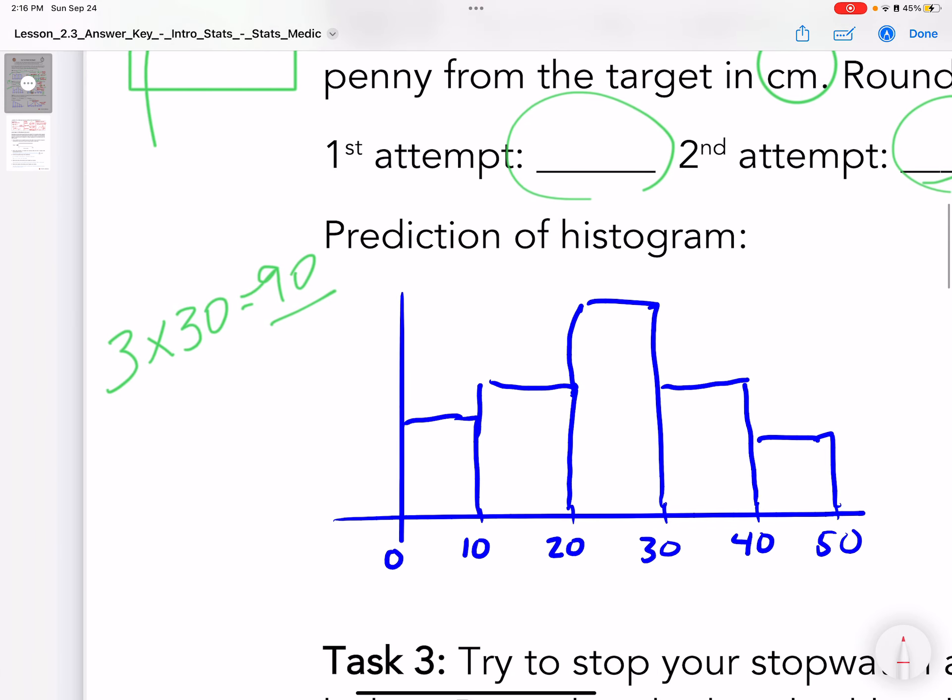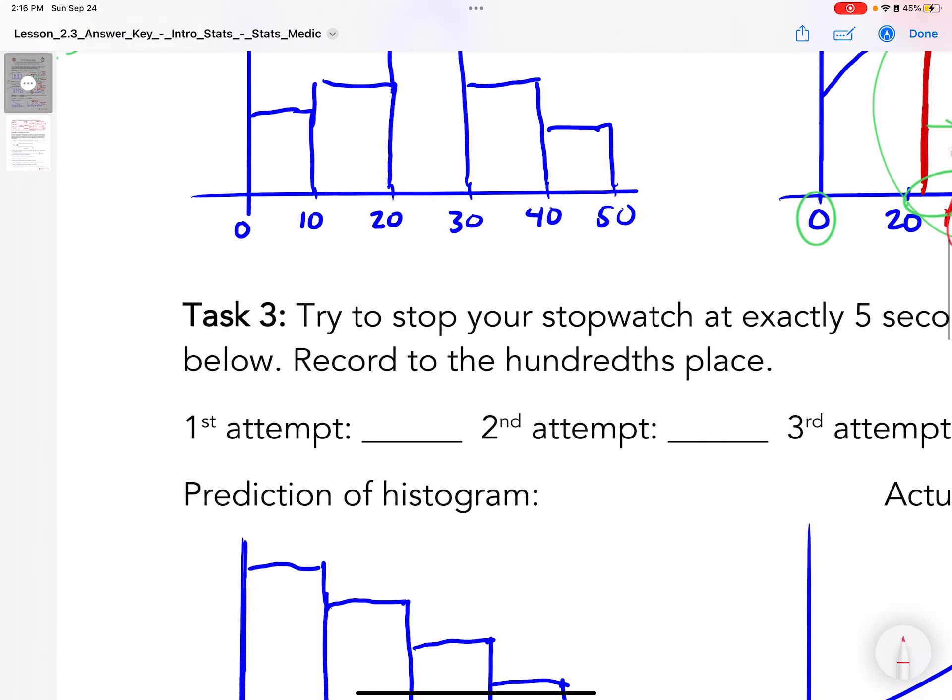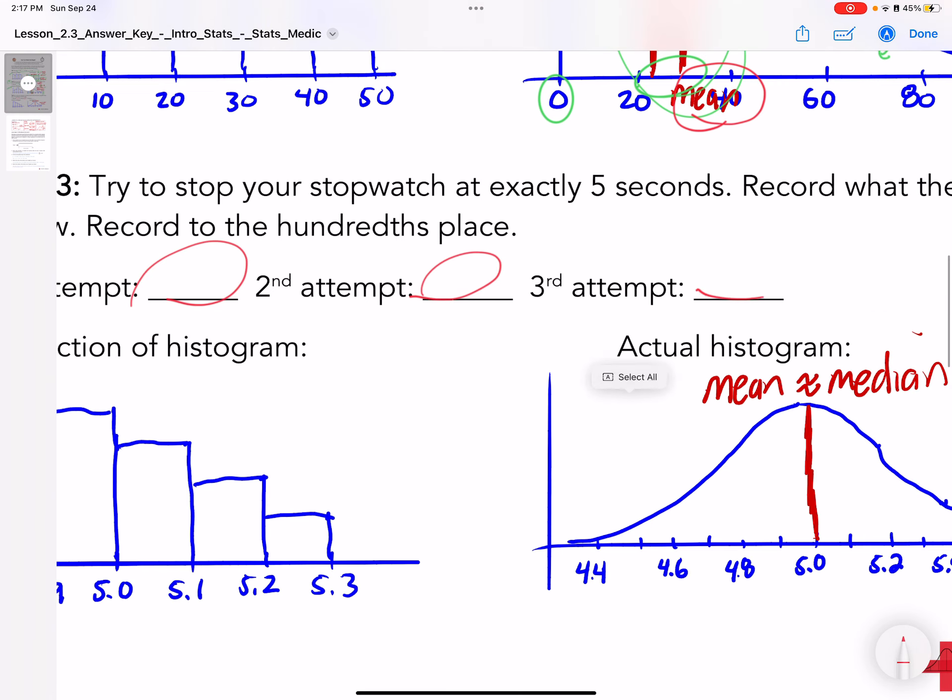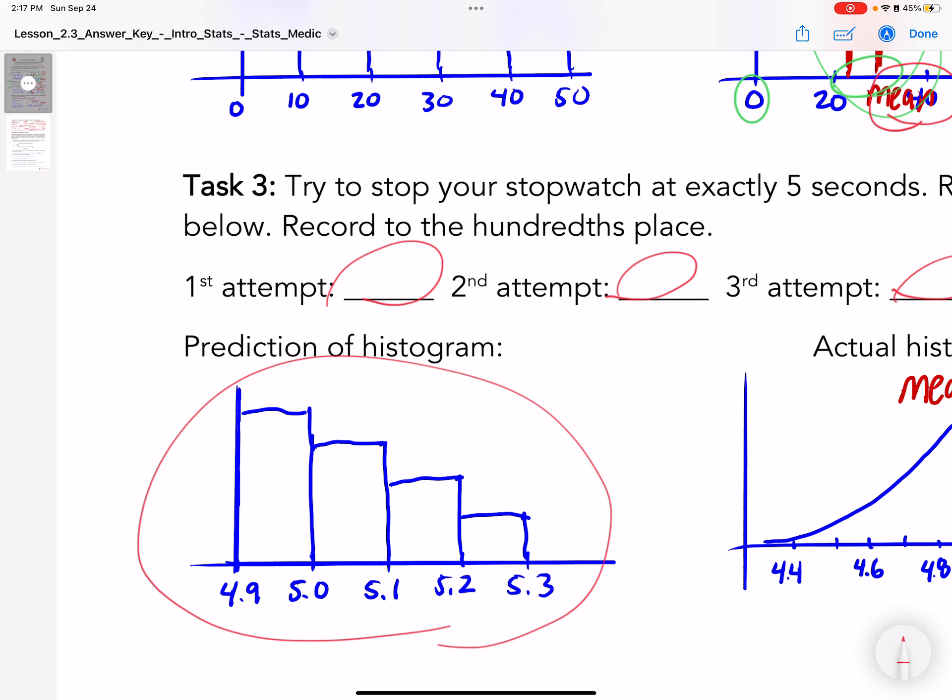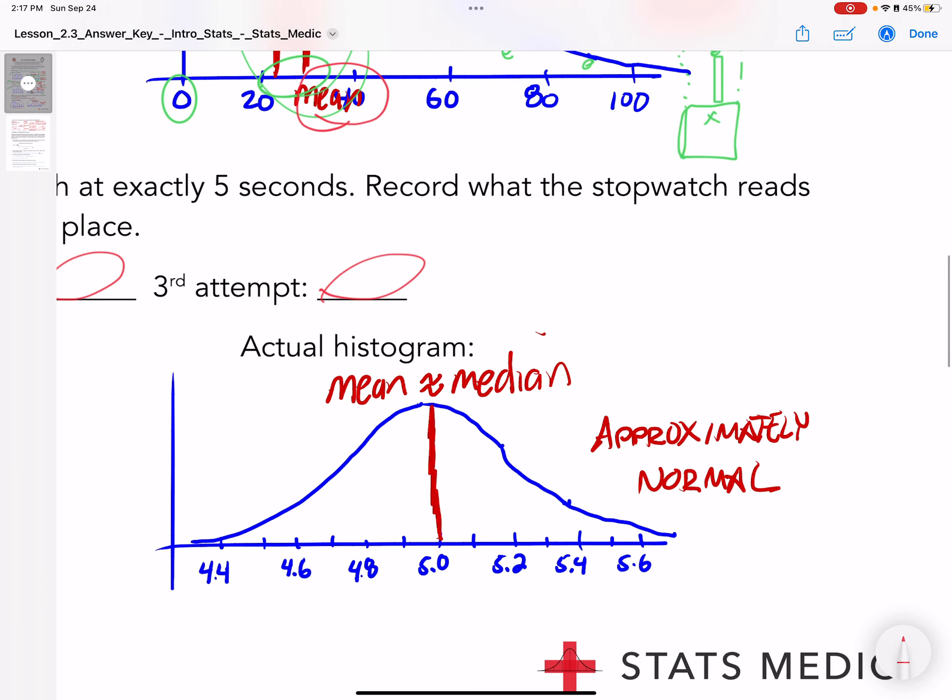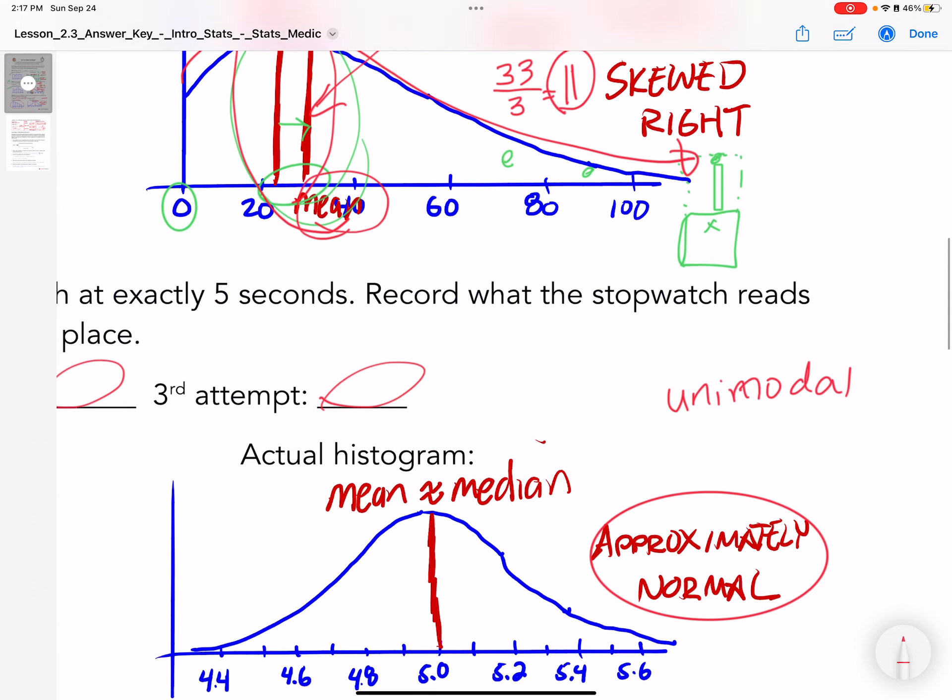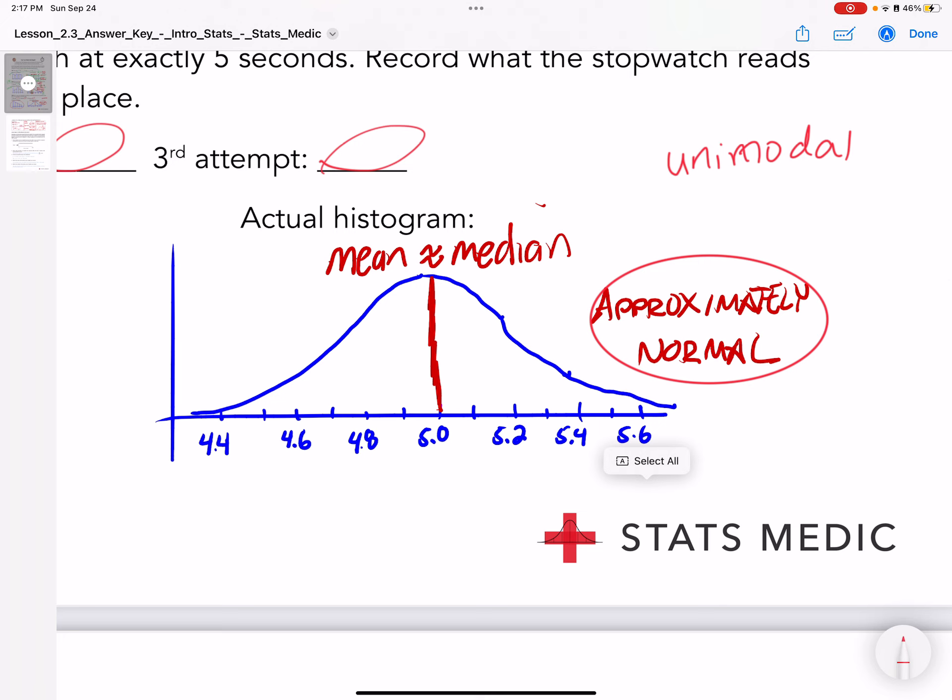The last experiment I had them do is take their iPhone and try to stop it right at 5 seconds exactly. So then I had them put 1, 2, and 3 attempts right here that they got. This was the actual histogram we got. This is a distribution we call approximately normal because it's unimodal. Unimodal means one peak, one mode. Bell-shaped curve. And then it's symmetric. This one is unimodal and symmetric.